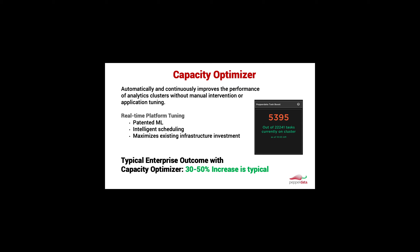Essentially what you get is patented machine learning that is automatically tuning your analytics platform in a way that allows more work to get done over time with the existing hardware. The tile on the right of the screen is showing the number of tasks that are being run because the Capacity Optimizer is applying intelligent resource management to the platform.